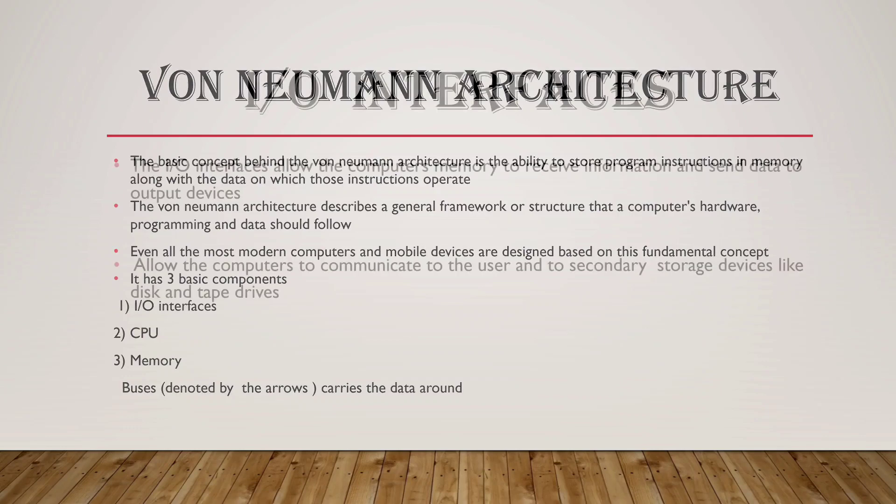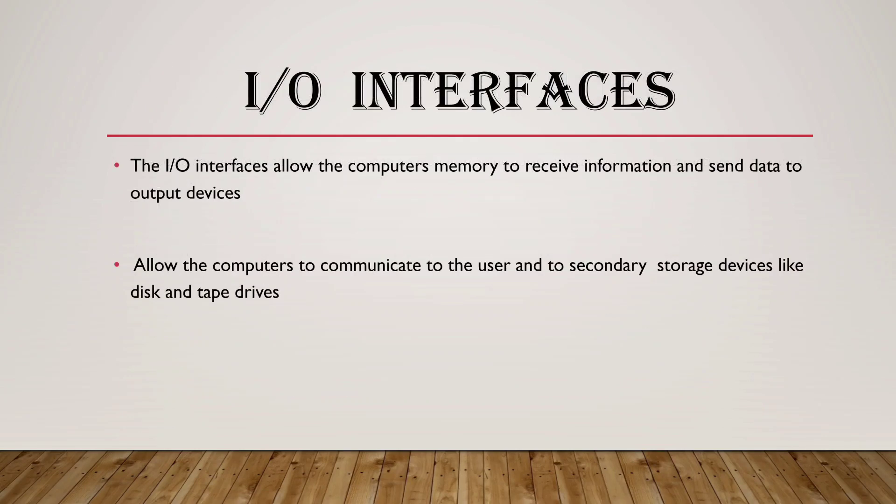The IO Interface allows the computer memory to receive information and send data to output devices. It allows the computer to communicate with the user and secondary storage devices like disk drives and tape drives.